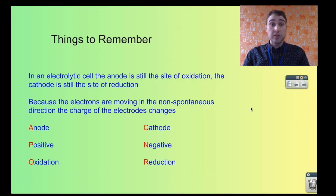Some things to remember from those diagrams we saw. In an electrolytic cell the anode is always the site of oxidation and the cathode is always the site of reduction. That's the same for electrolytic or galvanic cells. What changes though is the charge.